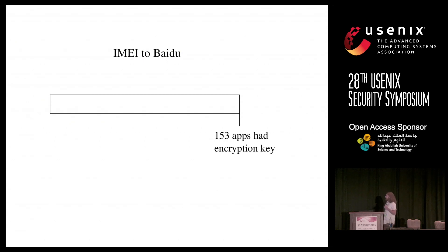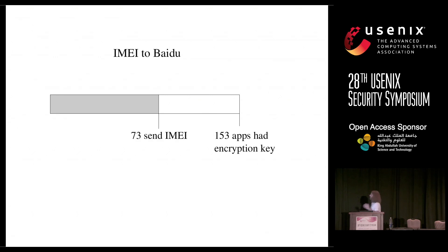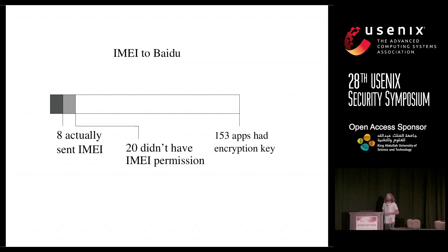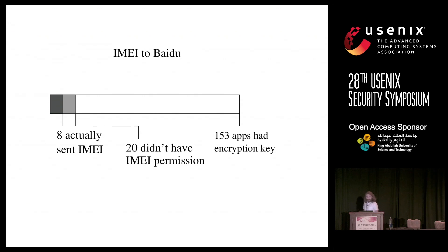When we looked at the prevalence in our dataset, we found 153 apps had the encryption key. Of them, 73 sent the IMEI. However, many may have had legitimate access since they requested the read phone state permission. Of the 153, only 20 didn't have the IMEI permission, and of those, eight actually sent the IMEI — they used this side channel between apps to get the IMEI and send it.